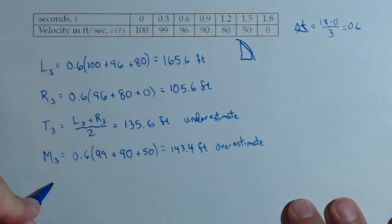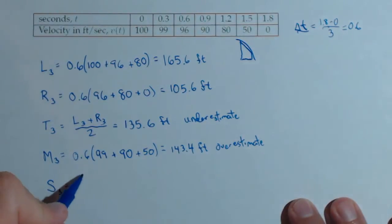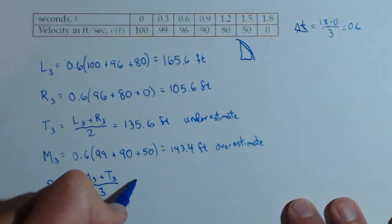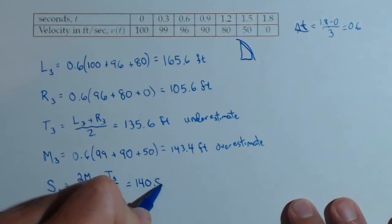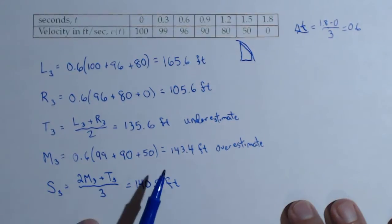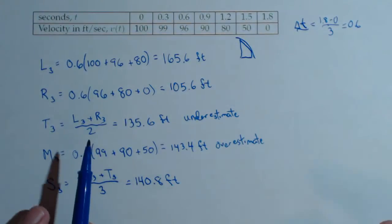If we'd like to get a little bit more accurate, we could do a Simpson's rule because we have the trapezoid and the midpoint rule. Simpson's rule is 2 times the midpoint rule plus the trapezoid rule all over 3. It's a little bit of a weighted average. And that comes out to be 140.8 feet. So this is going to be a pretty nice, accurate estimate of our total distance traveled.